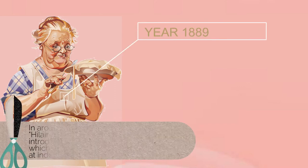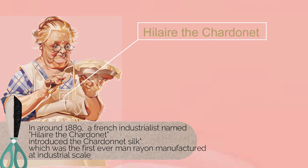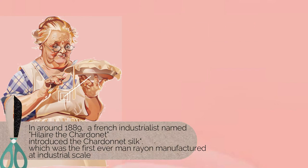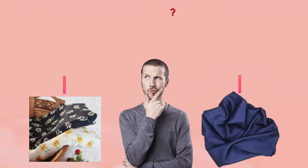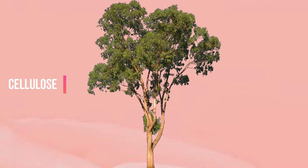Around 1889, a French industrialist named Hilaire de Chardonnet introduced the Chardonnet silk, which was the first ever man-made rayon manufactured at industrial scale. Since then, many varieties have been introduced that have the appearance of silk but are actually rayon.